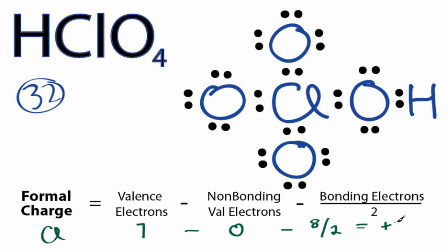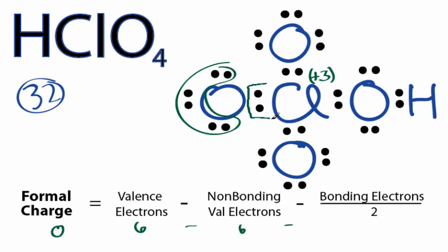The oxygens, these three are the same, so let's just do one of those. Oxygen is in group 6 on the periodic table. It has 6 valence electrons, minus non-bonding, 6 non-bonding, minus bonding. We have 2, which we'll divide by 2, for a total of -1. That's the formal charge on these three oxygens.